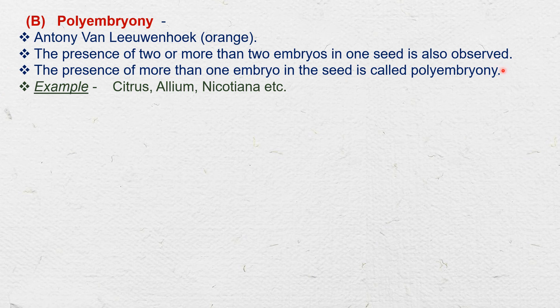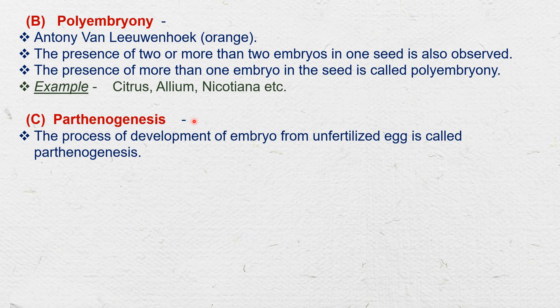Normally, only one embryo is formed in one seed. The next mode is parthenogenesis. Normally, an egg develops into an embryo after fertilization, but sometimes fertilization fails to occur and the unfertilized egg develops into an embryo. The process of development of an embryo from an unfertilized egg is called parthenogenesis — for example, honeybees.